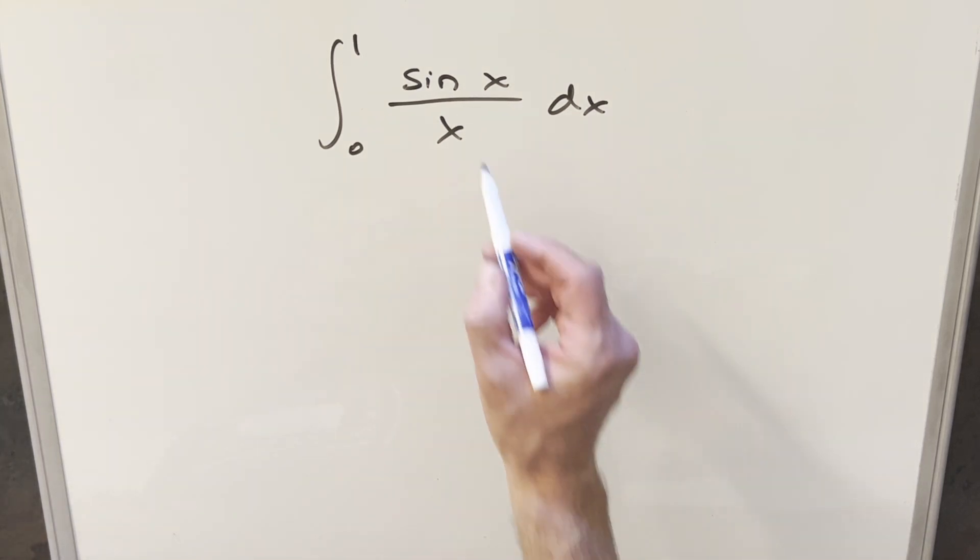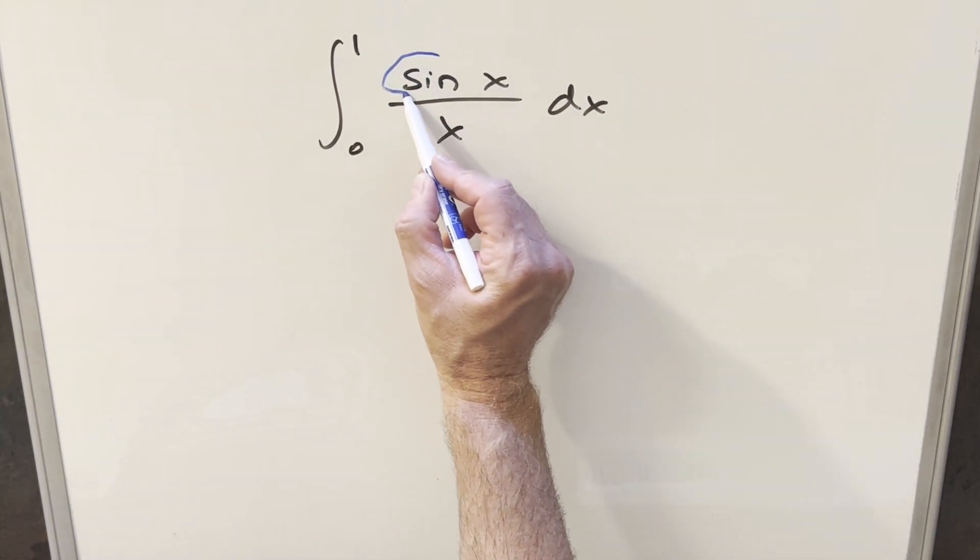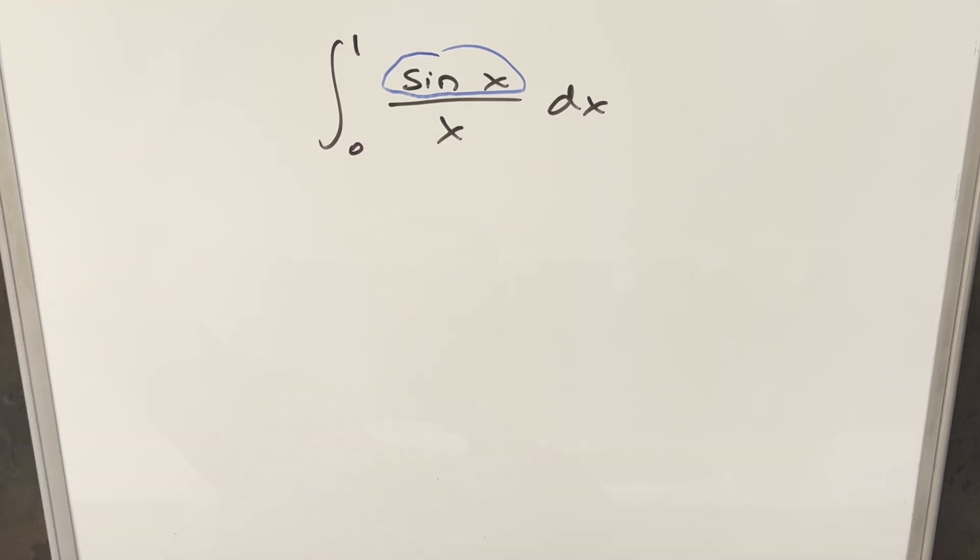So what I actually want to use for this is the power series for sine x. We know the McLaren series. We can write this as x minus x cubed over 3 factorial plus x to the fifth over 5 factorial.